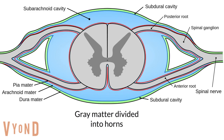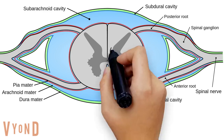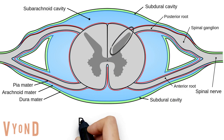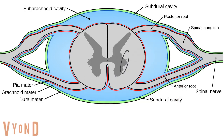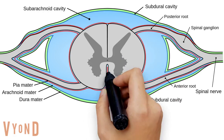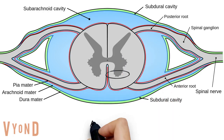The gray matter is divided into horns: the posterior horn, the lateral horn, and the anterior horn.